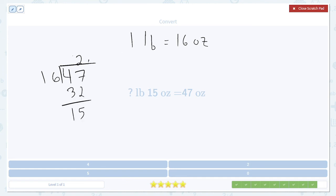Giving us a remainder of 15, which is a big remainder. But because it's less than 16, it's perfectly fine. So that tells us that there's 15 ounces left over after the quotient of 2 pounds.